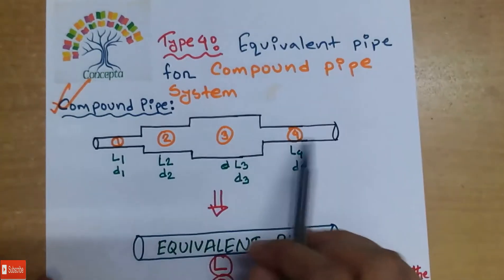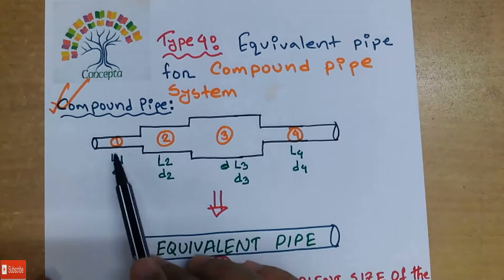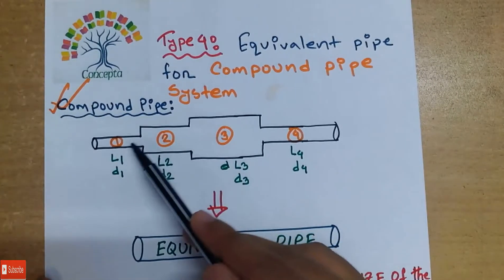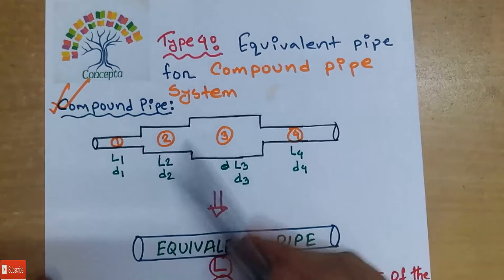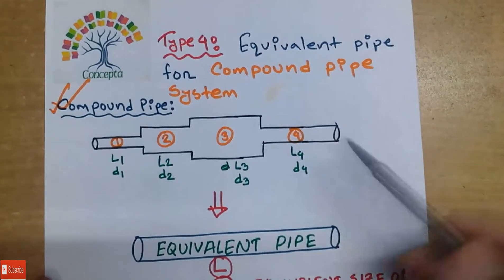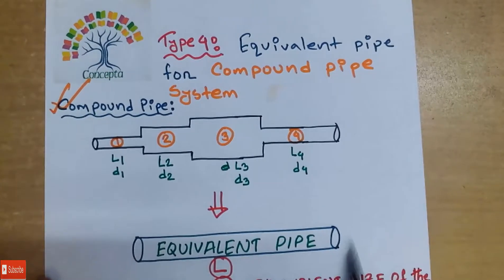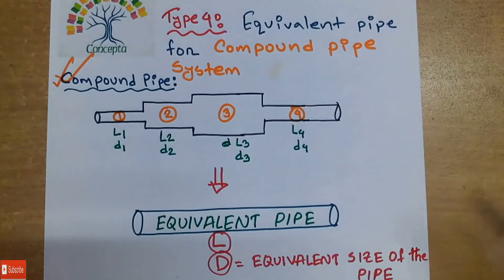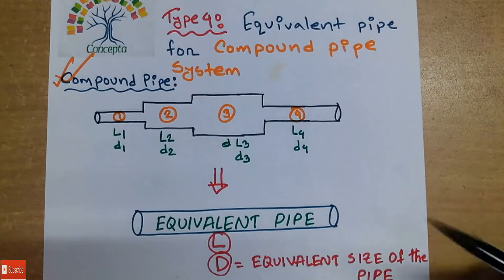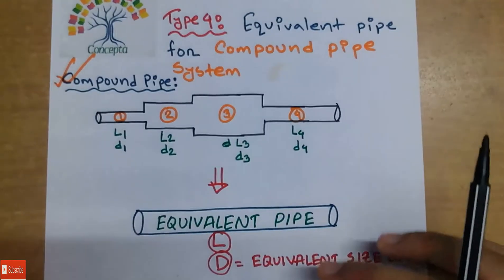We had a different length of the entire pipe. We had seen some different length of the entire length and equivalent size of the pipe. Now we have made this formula for the compound pipe. So we will see the formula in this tutorial. So let's see.